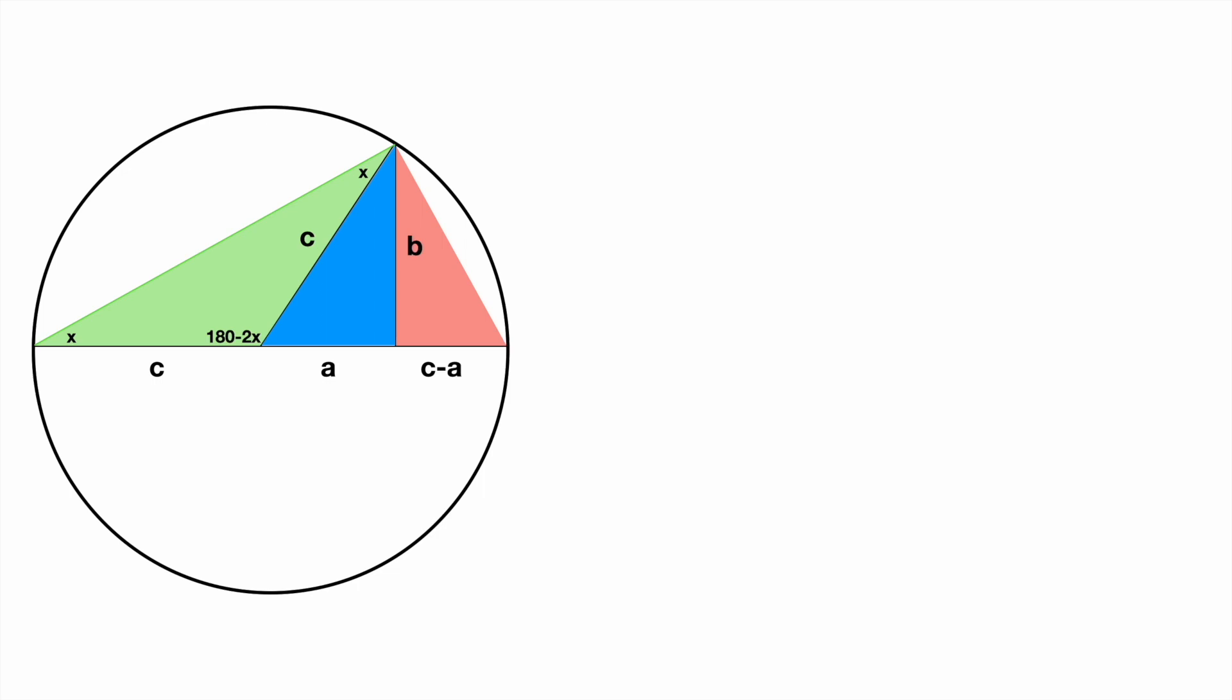Using supplementary angles, we'll find that this angle on the blue triangle is equal to 2x. Now that we know two angles, 90 and 2x, we can subtract them from 180 to get 90 minus 2x.